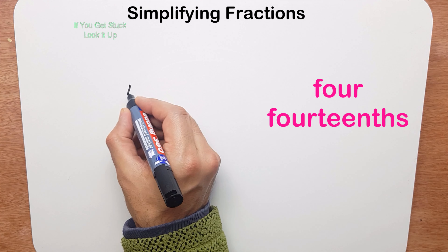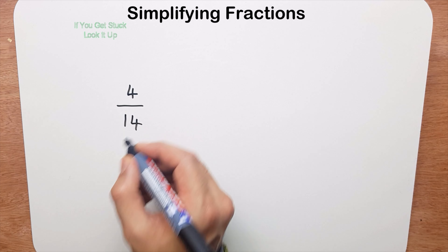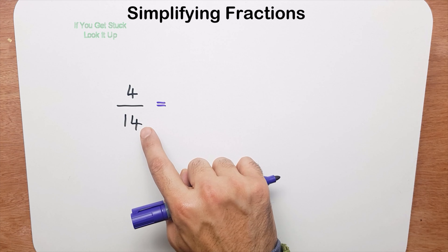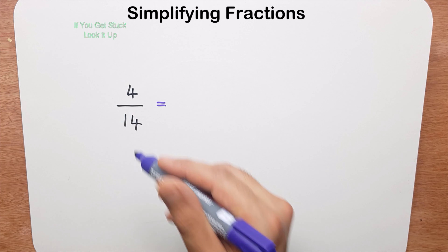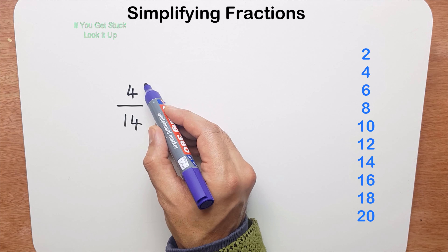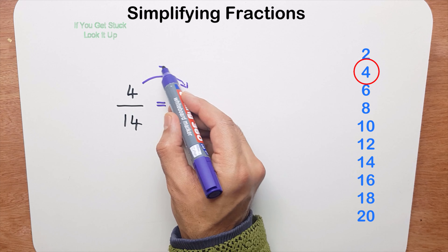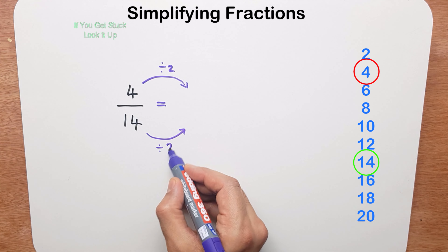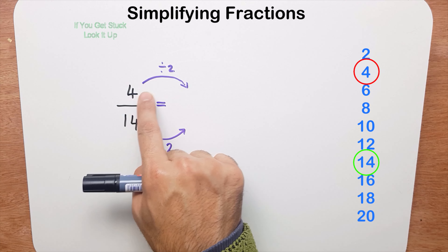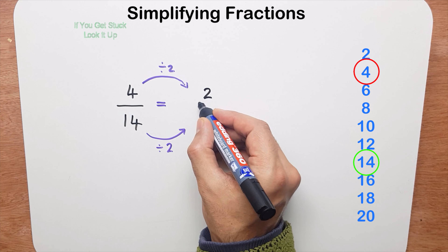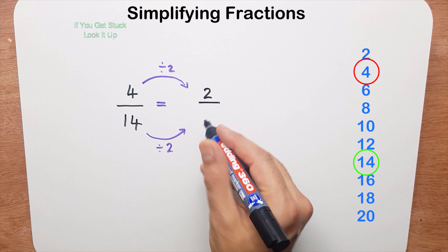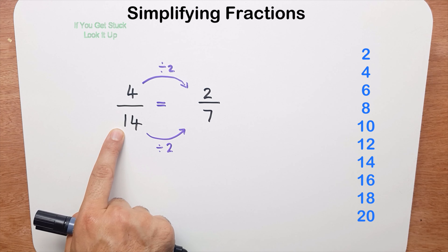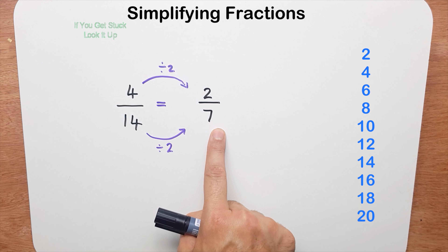The next question is 4 fourteenths. I ask myself the same question: which times table are 4 and 14 both in? I can see they're both even numbers, so they're both in the 2 times table. I divide the numerator by 2 and the denominator by 2. 4 divided by 2 is 2, and 14 divided by 2 is 7. So 4 fourteenths has been simplified to 2 sevenths.